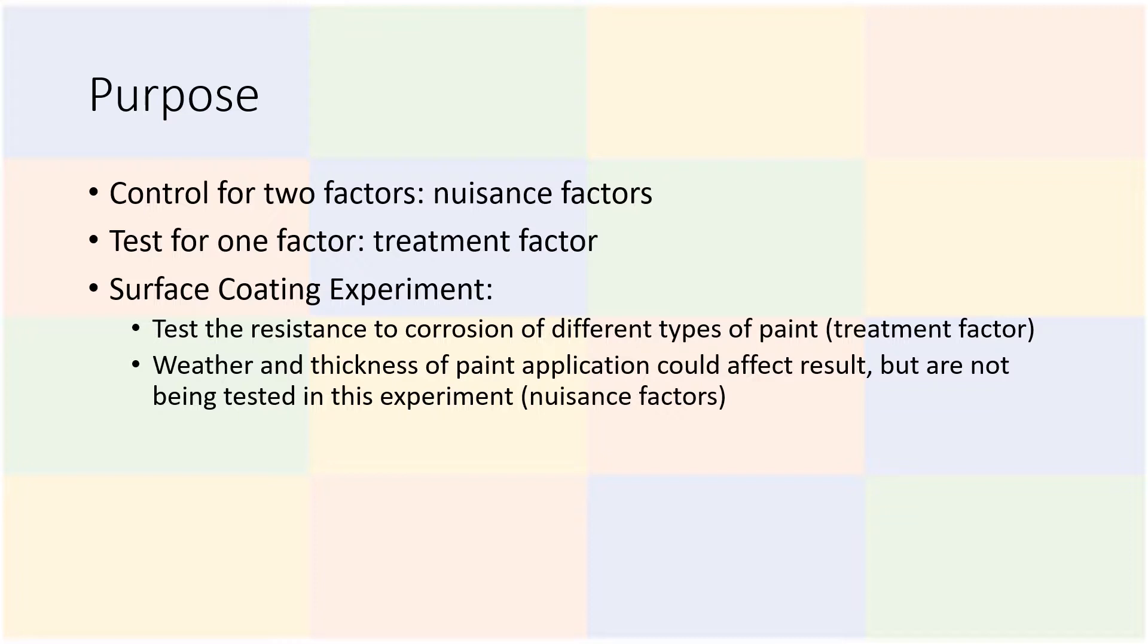The experimenter could control the subsurface material for the test, for example, using the same steel for each test. But the surface coating would most likely be exposed to different types of weather, whether it is located on the coast or farther inland, and one operator may apply the coating differently than another.